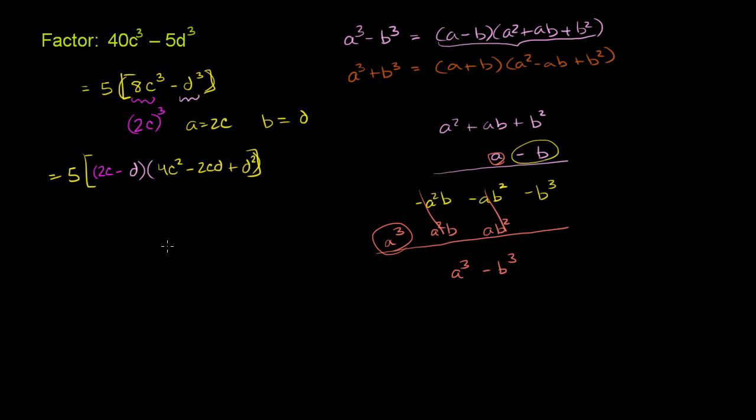And actually I'm forgetting a parentheses over here. And we're done. And we know that we can get rid of those brackets. This is the exact same thing as 5 times 2c minus d times 4c squared minus 2cd plus d squared. And you can attempt to factor this again, but we won't do it in this problem. And it's actually not a trivial thing to do. And I'll leave you there. We have factored this as a difference of cubes.